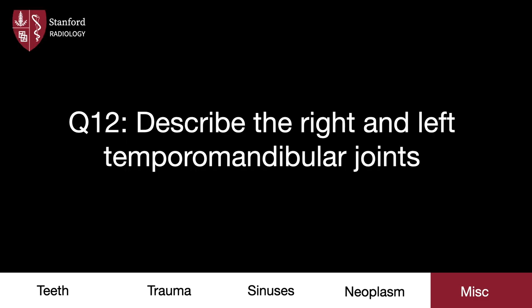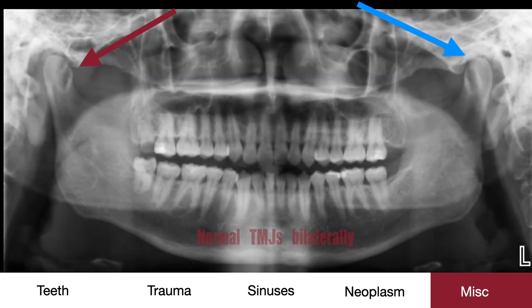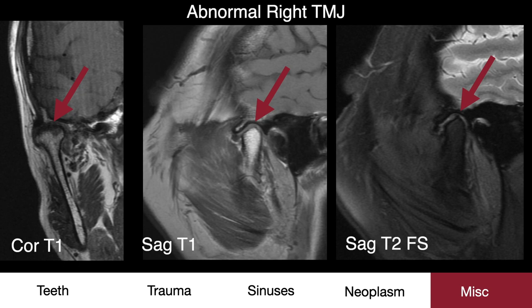Here's a final case — describe the right and left temporomandibular joints. The TMJ consists of the mandibular condyle with the glenoid fossa of the temporal bone. Note that on the right, the joint space is narrowed relative to the left. As a refresher, a normal TMJ should show joint spaces that are not narrowed on both sides, with no abnormal sclerosis of the mandibular condyles or glenoid fossa. Going back to the original case, here is the follow-up TMJ MR. Note how the morphology of the condyle is diamond-shaped, suggesting osteophytic degenerative changes.